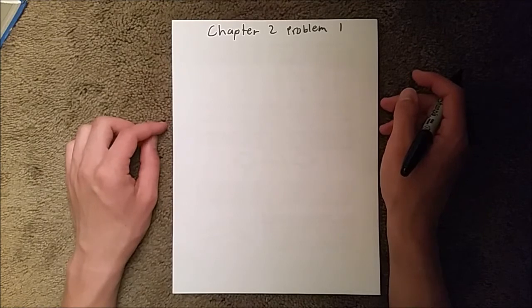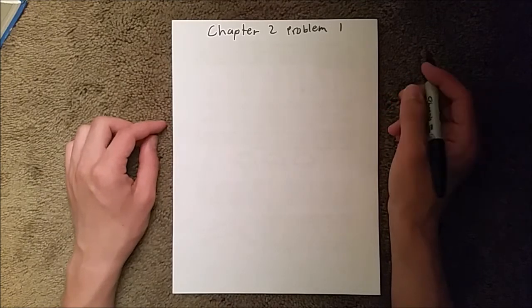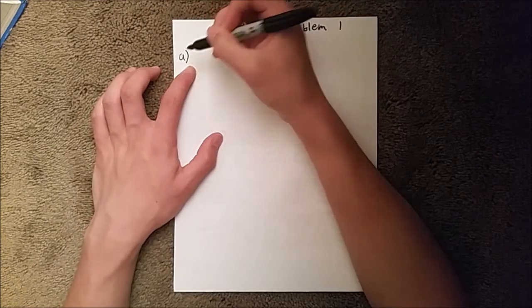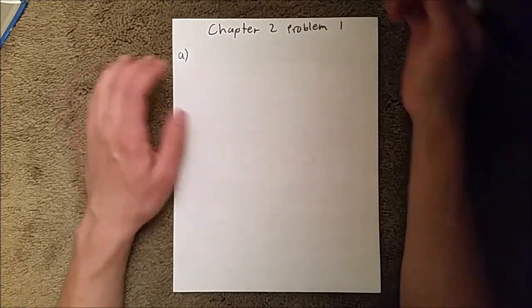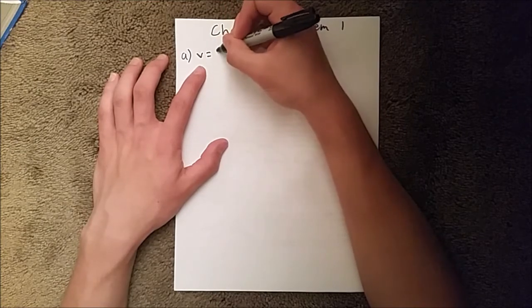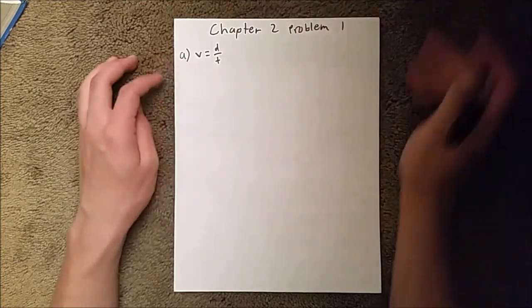And Part A asks for the average velocity during the total trip. So, let's start with our fundamental equation, velocity equals distance over time.